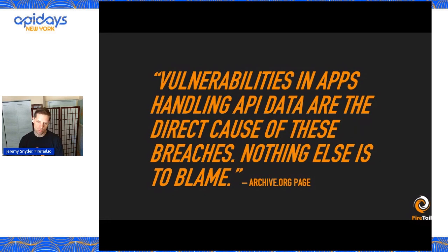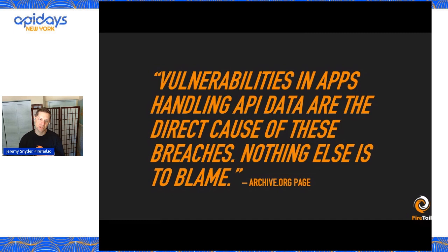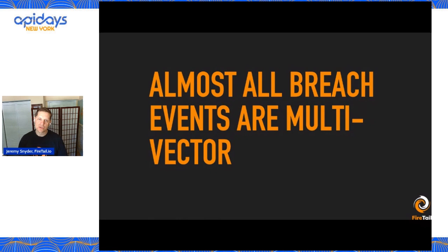I found this quote on archive.org on an article that is no longer public on the web, but it does analyze API security: 'Vulnerabilities in apps handling API data are the direct cause of these breaches. Nothing else is to blame.' One of the other really interesting findings is that typically at least two things go wrong — basically all breach events are multi-vector.